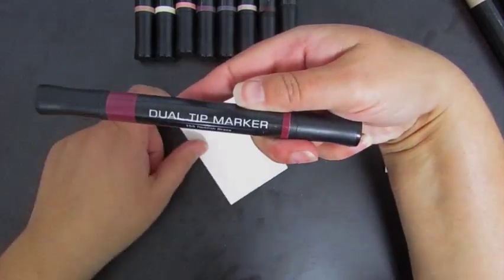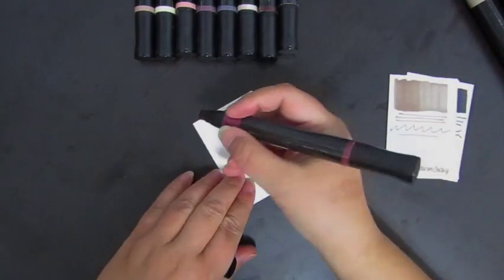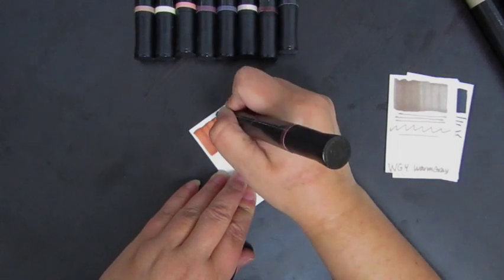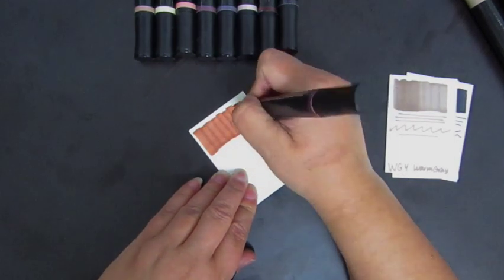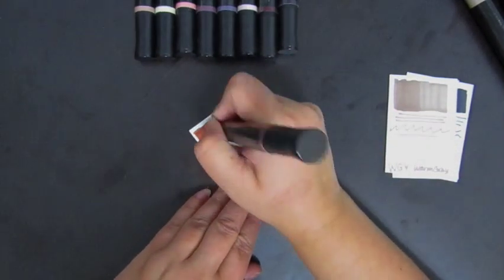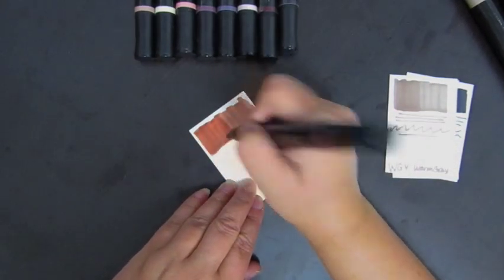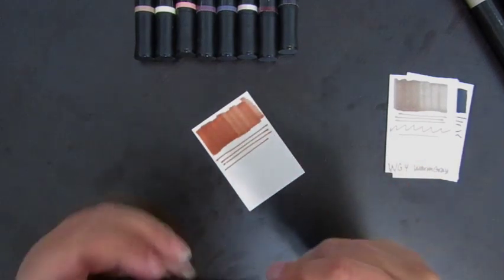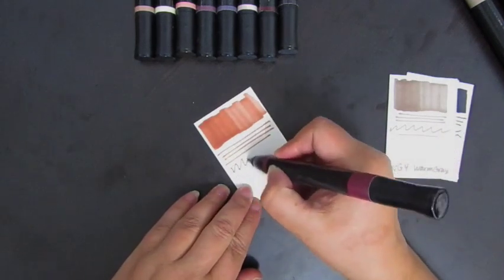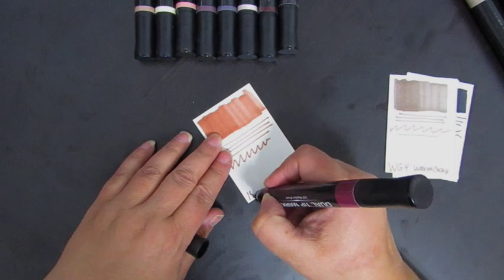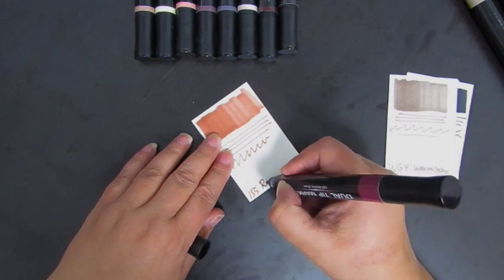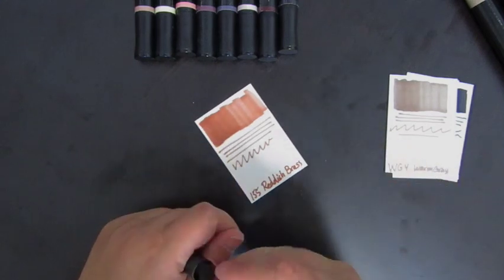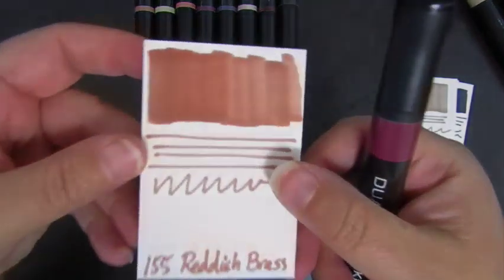So now this one is called reddish brass. They're very neutral colors, which is why I picked up this set, to do a neutral base color under some other products for mixed media. And as I said, this is 155 reddish brass. I like it.